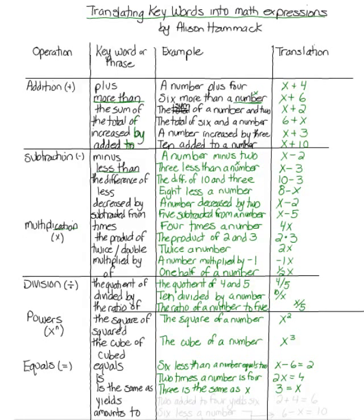Yields. 2 added 4 yields 6. So 2 added 4 yields 6. A number amounts to 10. So, we want to translate this, we're doing both of these together and we'll label it here. So six less a number amounts to ten is going to be six minus a number equals ten.